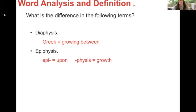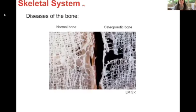What's the difference in the following terms? The diaphysis is the shaft of a long bone — I just memorized how to write it. That's what's growing in between, that's why it's the shaft of the long bone. The other term refers to the extended part. Comparing normal bone to one with osteoporosis, you can see it's actually breaking down — these are diseases of the bone.